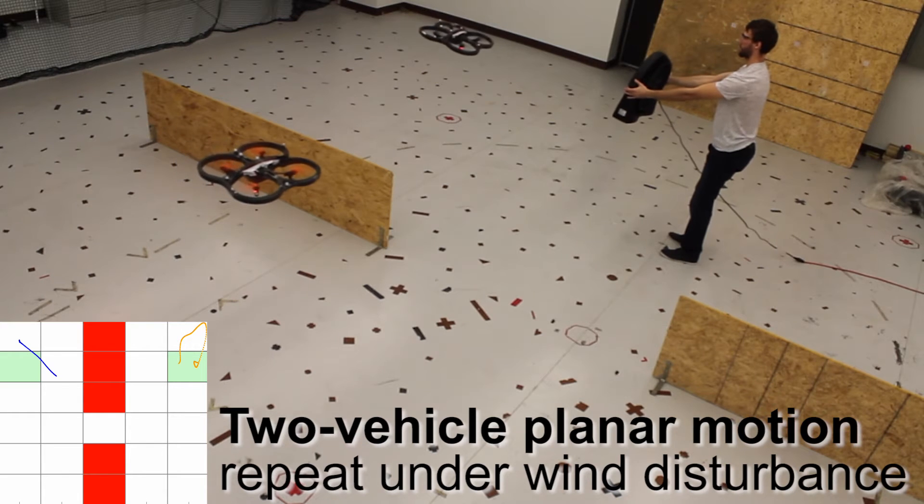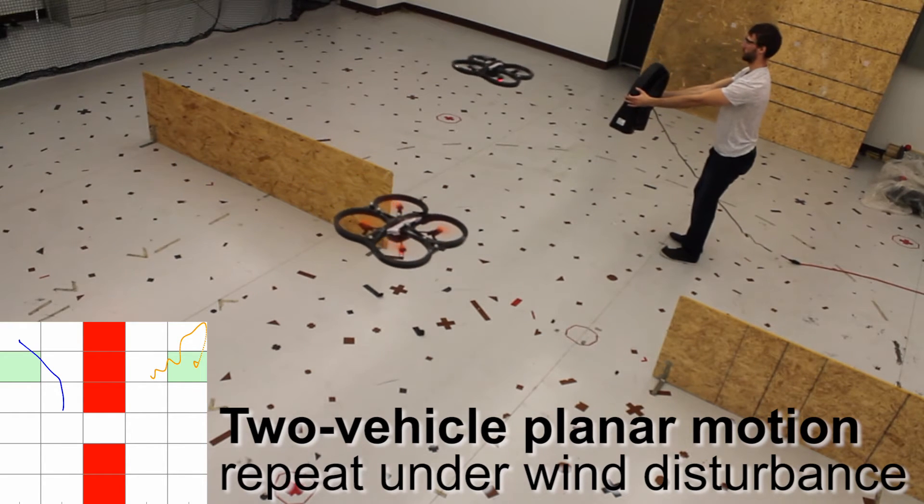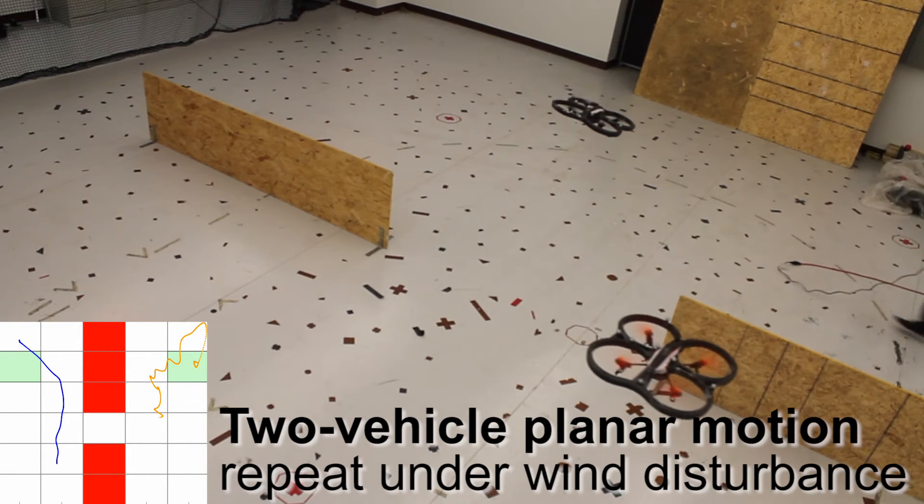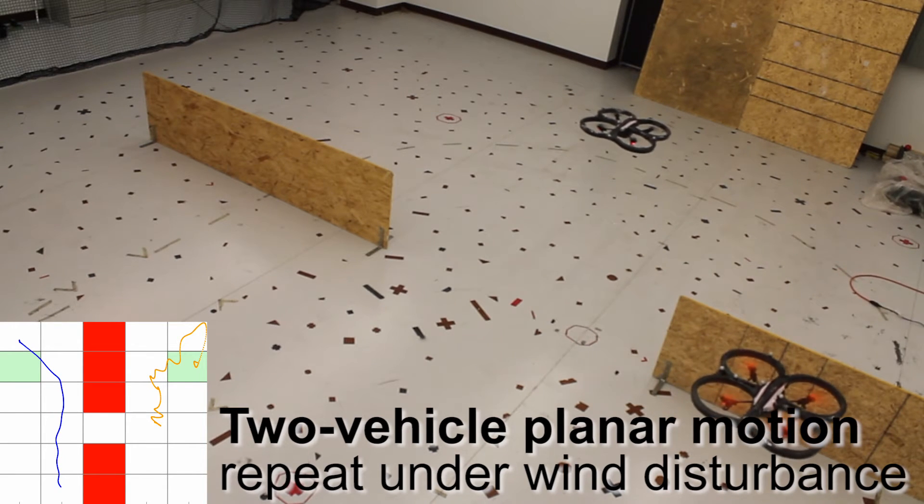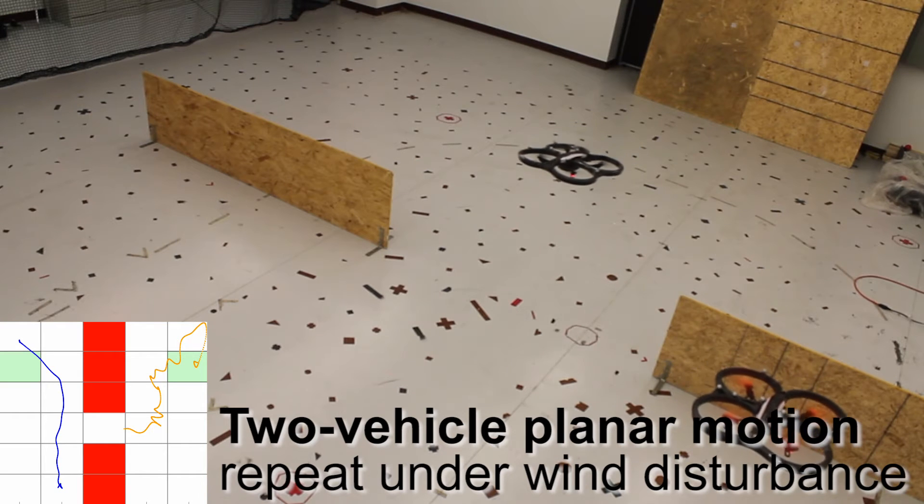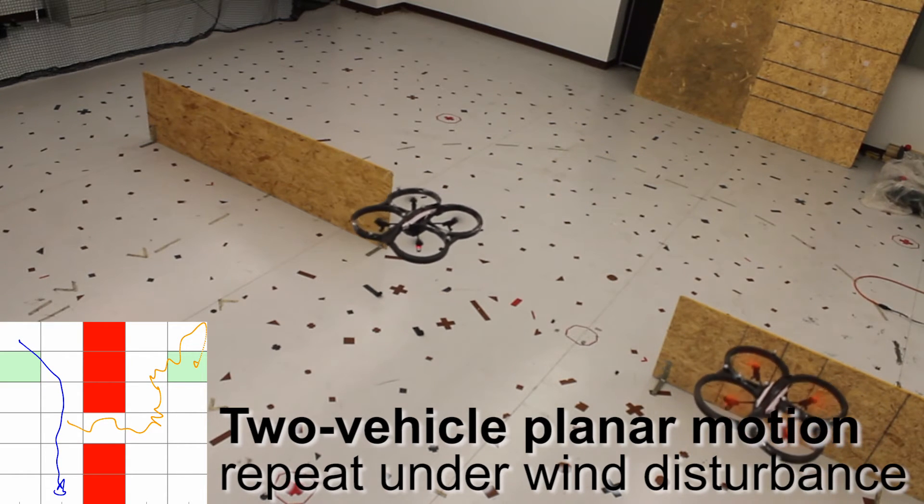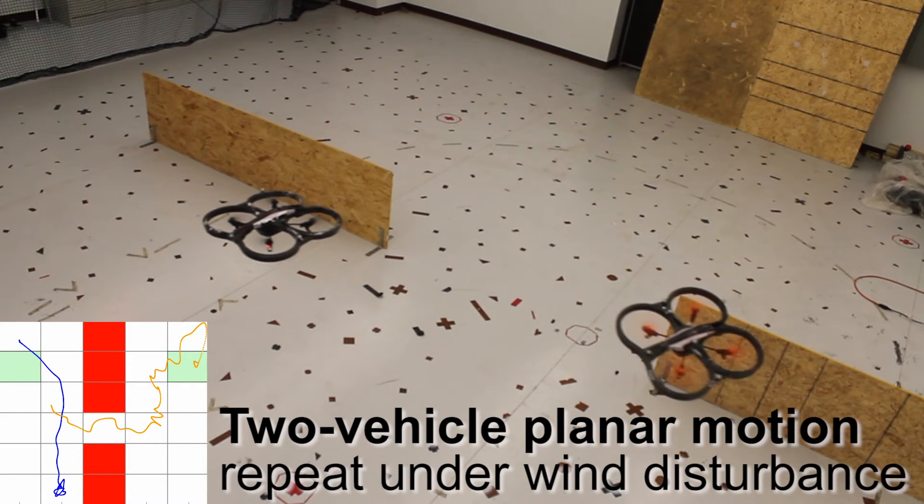To further illustrate the robustness of our approach, we repeat the two vehicle planar motion scenario under a wind disturbance using the same precomputed hybrid controller. The wind causes an unpredictable delay on the vehicle to the right, causing the two vehicles to automatically follow a different path.